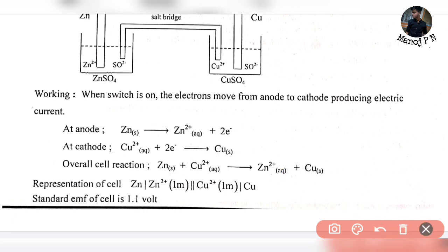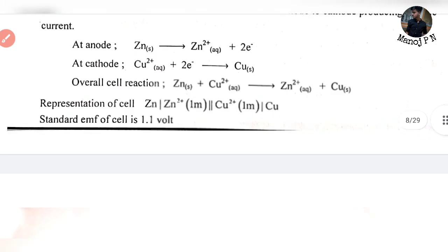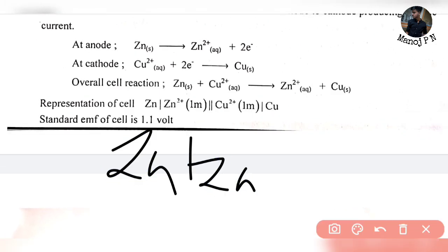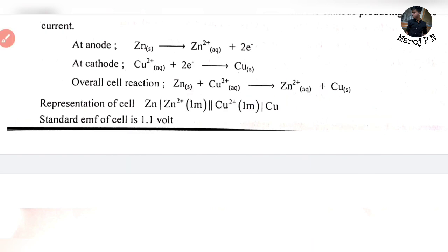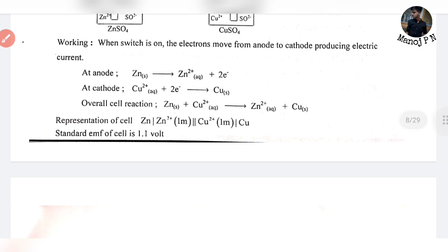Representation of cell: Zn|Zn²⁺(1M)||Cu²⁺(1M)|Cu with a salt bridge. The standard EMF of the cell is 1.1 volt.